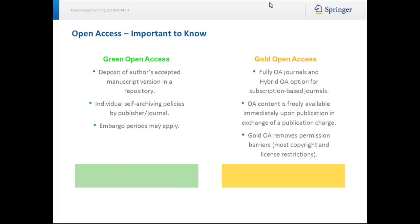Just to give you some basics on what open access encompasses, there are two models of open access. There's green open access, which is a deposit of an author's accepted manuscript version in a repository. It includes individual self-archiving policies by publisher or journal, and embargo periods may apply. Gold open access, which will be the focus of this presentation, encompasses fully open access journals and hybrid open access options for subscription-based journals.